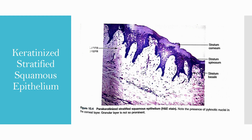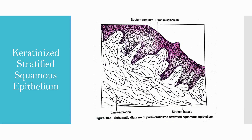This is the parakeratinized stratum corneum, and as you can see, it is different from the orthokeratinized. The structure of the basal layer is also different. In the stratum corneum here, you can see flattened cells with a pyknotic nucleus — which you would not see in the orthokeratinized epithelium.